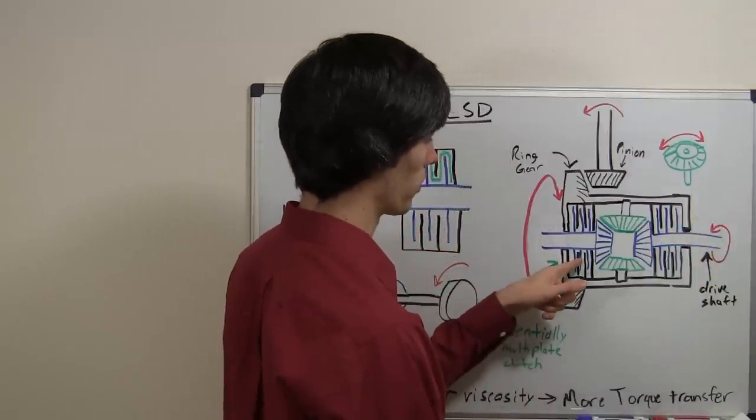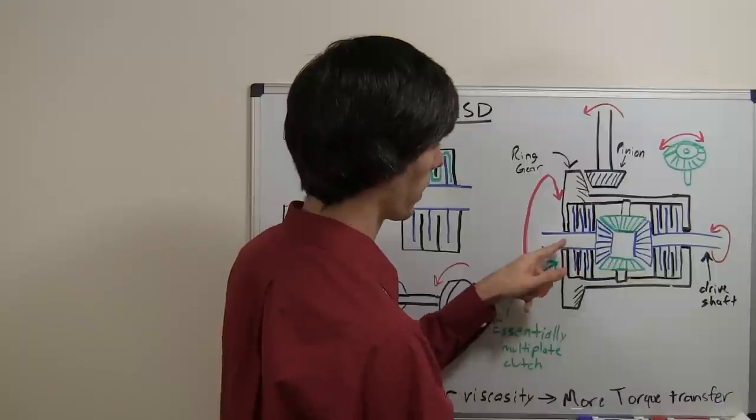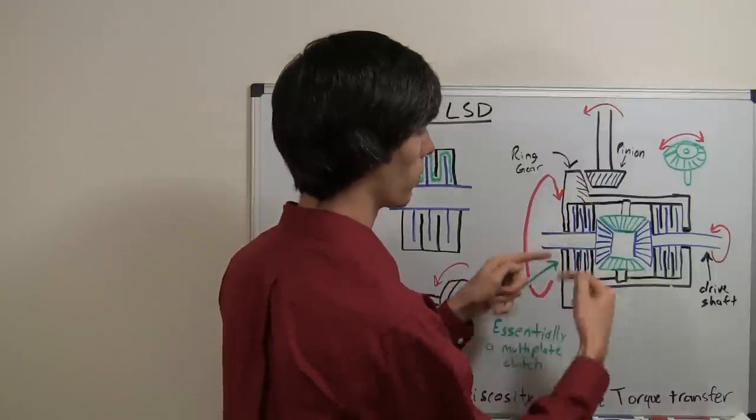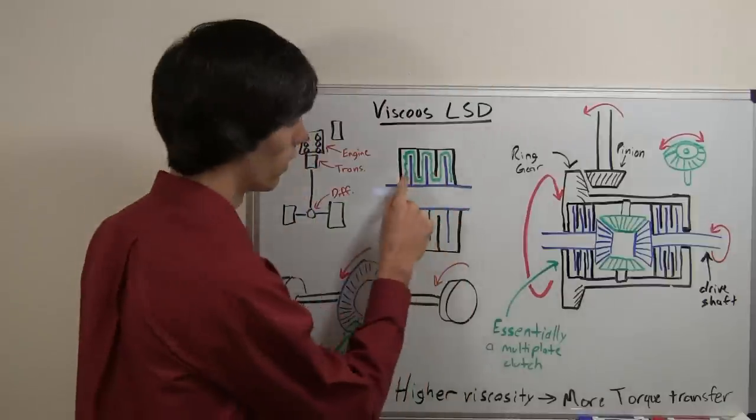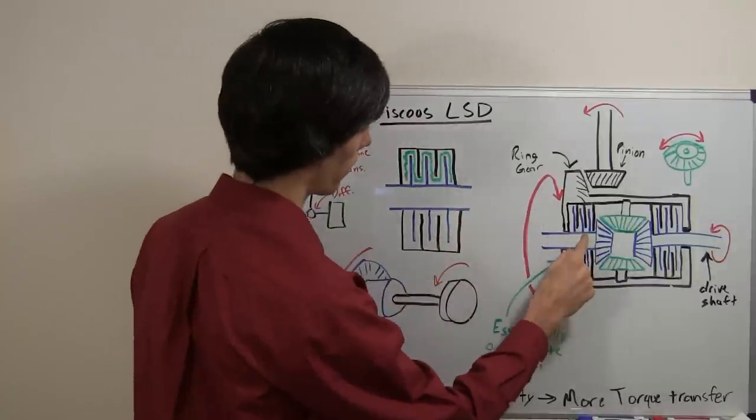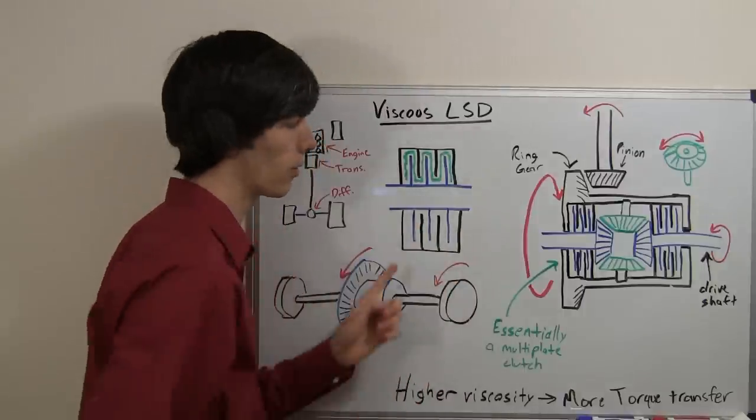There will, however, be a different speed with this left drive shaft. So as this differential housing is rotating, it's pulling that liquid around in there with it and this blue shaft is not rotating.